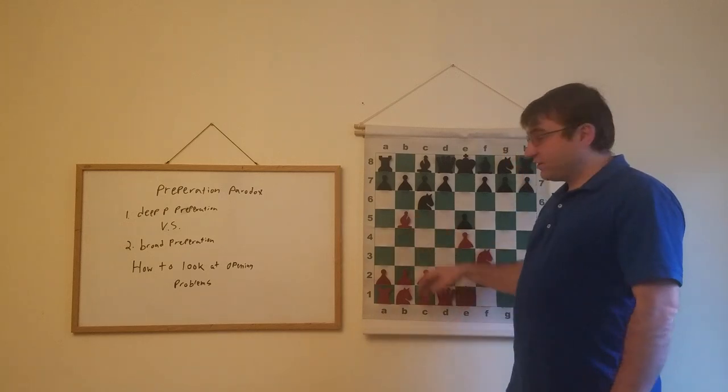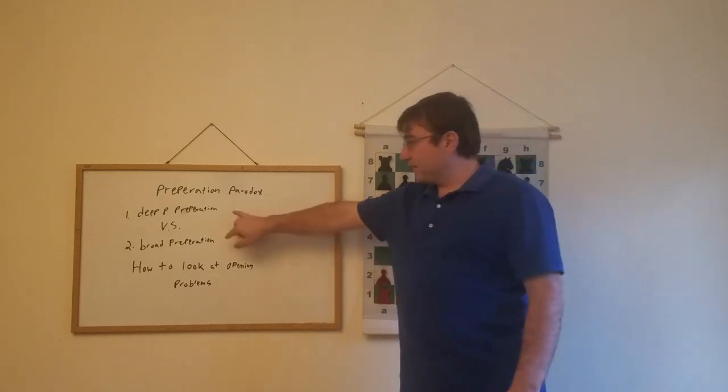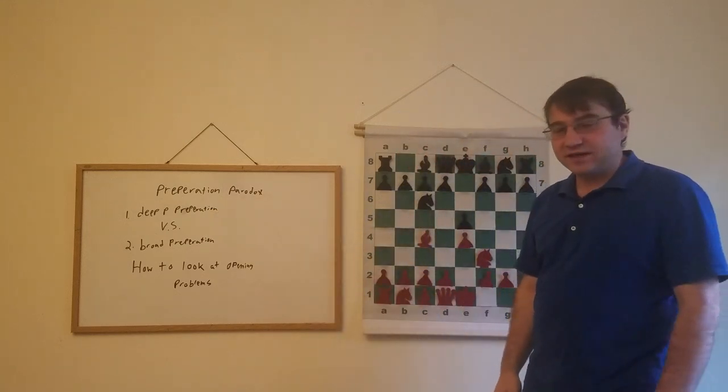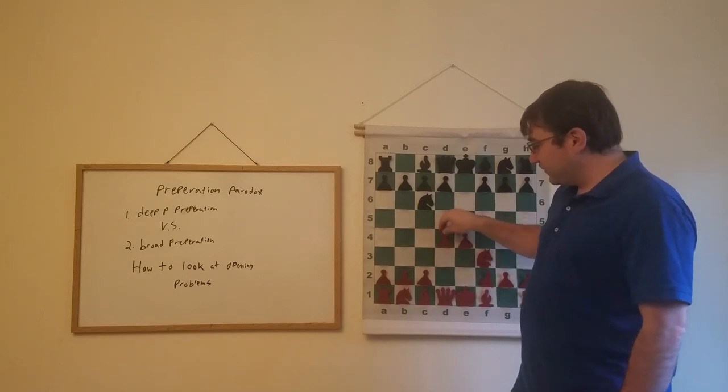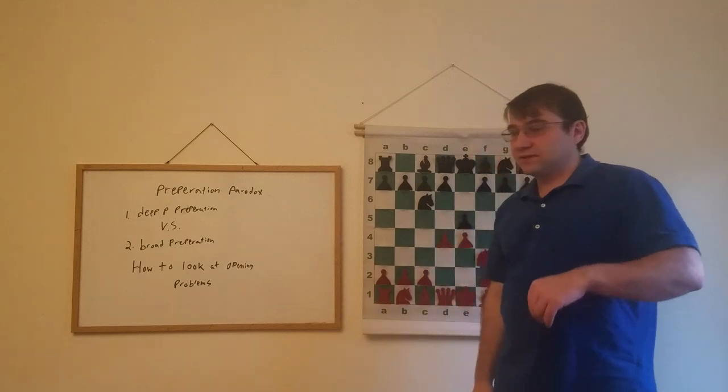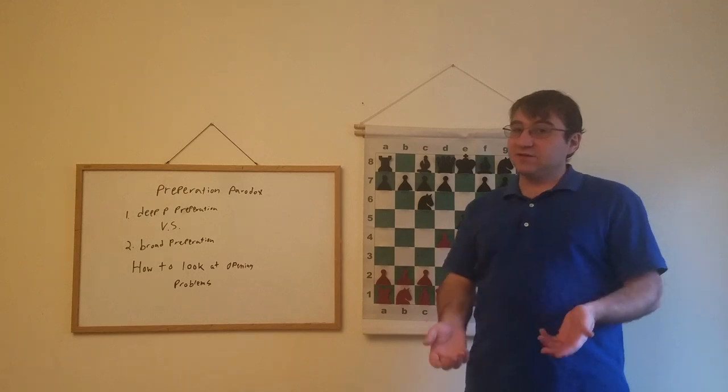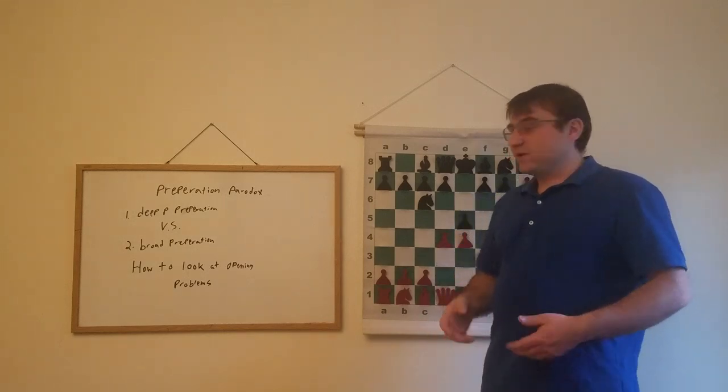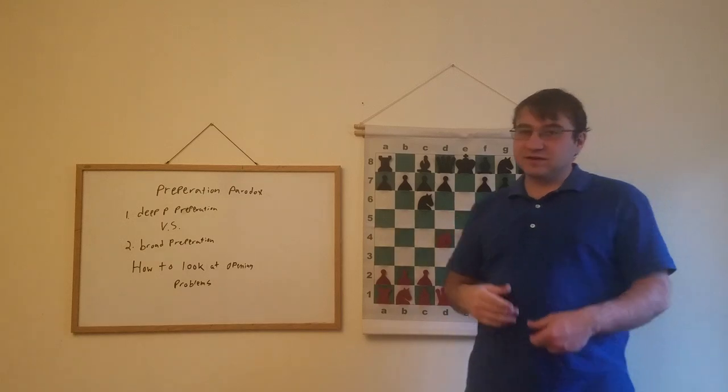So that's why players will throw other openings into their repertoire. Instead of bishop b5, sometimes people play a move like bishop c4, and again this is to try to flip that preparation paradox kind of on its head. Bishop c4 or the Scotch with d4 are openings that offer white slightly less of an advantage, but the upside is that you're putting that immediate pressure on black center, you're taking the flexibility out of the position, you're determining the structure immediately.